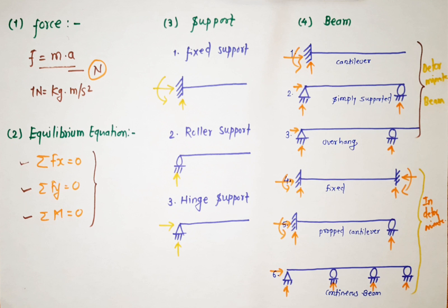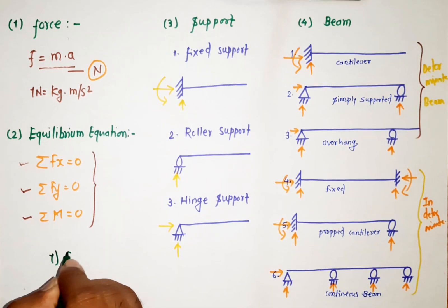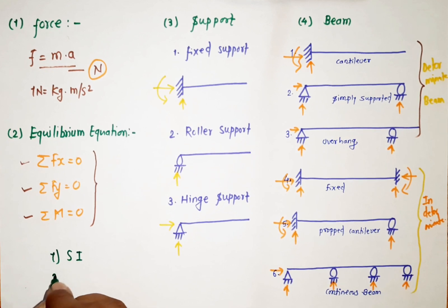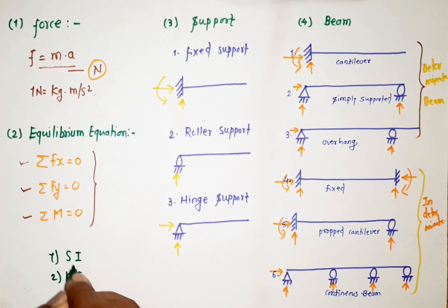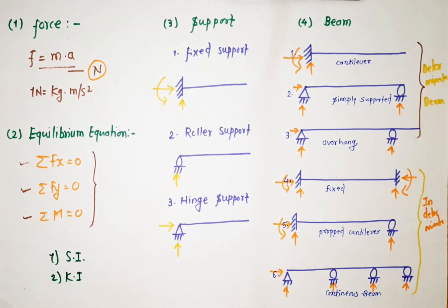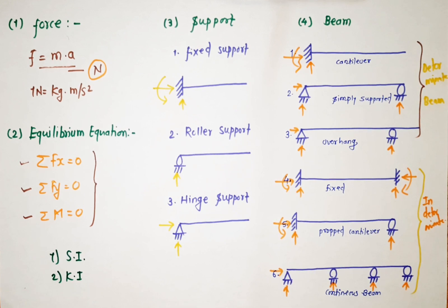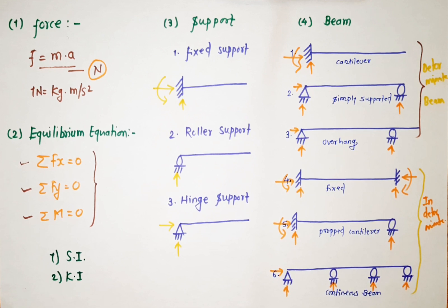When we want to solve indeterminate beams, we need a few more concepts. These are called static indeterminacy of a structure and kinematic indeterminacy of a structure. Only then can we calculate and solve those indeterminate structures. In the next video, we will learn about static indeterminacy and kinematic indeterminacy. Thank you for watching.